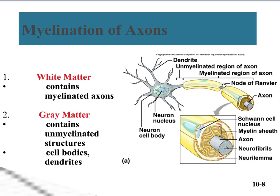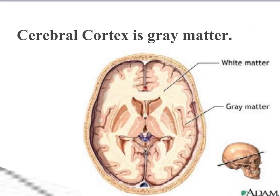Myelinated brain or spinal cord tissue appears white, while unmyelinated tissue appears gray. We can tell when looking at the brain or spinal cord whether we're looking at myelinated axons or unmyelinated cell bodies and dendrites. In a cross section of the skull and brain, we see white matter in the interior — myelinated axons — and in the outer last half-inch, the cortex or gray matter, we're looking at unmyelinated cell bodies and dendrites.